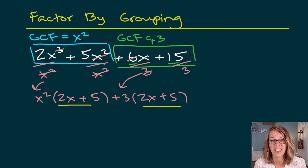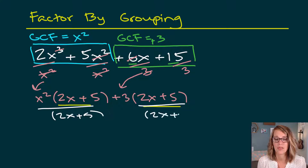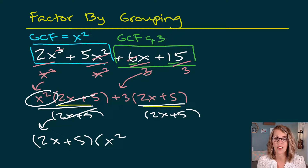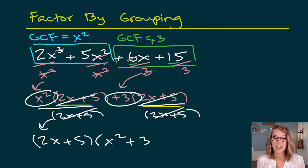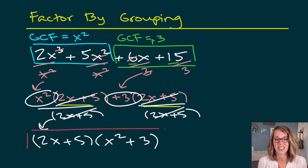That's going to help us shortcut this in the next example. I still need to factor out this common factor of 2x plus 5. I'm going to divide both terms by 2x plus 5, so that quantity comes out in front. Canceling it from the first group leaves x squared; canceling from the second leaves plus 3. A quick check confirms 2x plus 5 and x squared plus 3 can't be factored further — that's our answer.